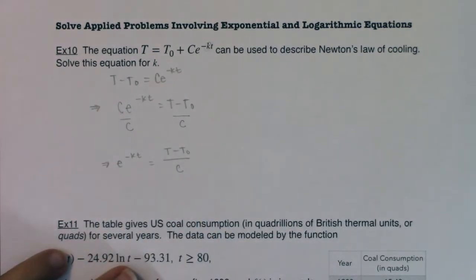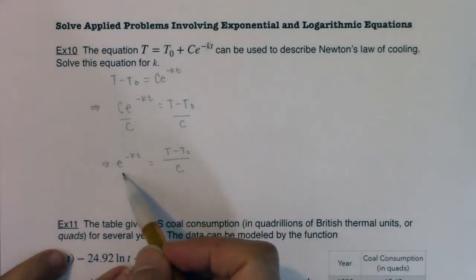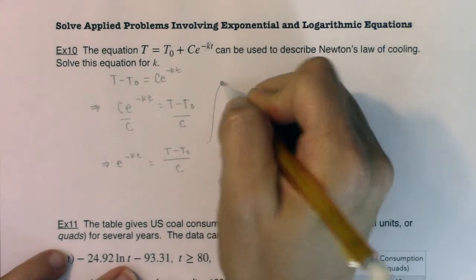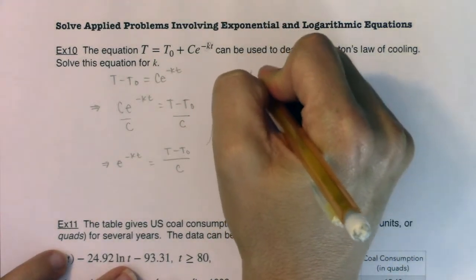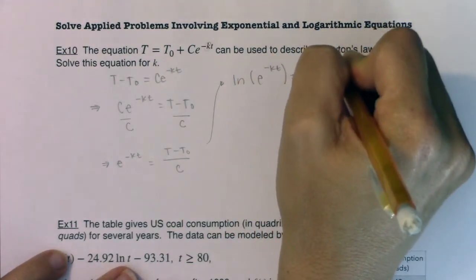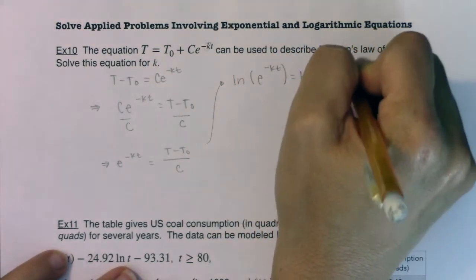I need to take the logarithm. And you can use log or ln. I'm going to opt to use ln because I've got an e here. So I'm going to take the natural log of both sides.